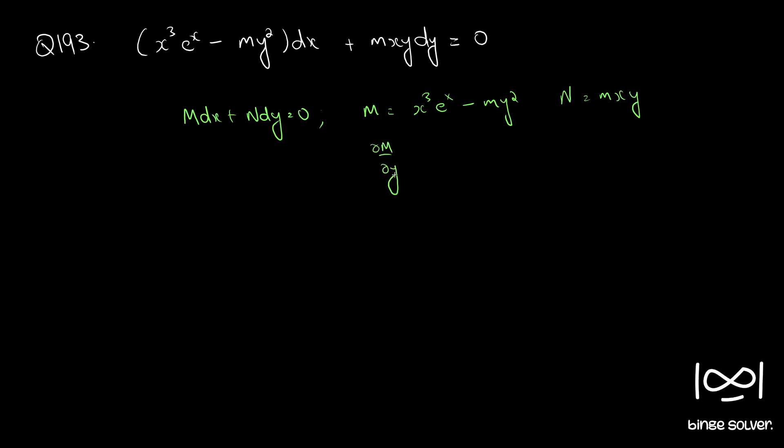We check whether the differential equation is exact using the necessary and sufficient condition, which is ∂M/∂y equal to ∂N/∂x. Here, ∂M/∂y is minus 2 m y and ∂N/∂x is m y. Therefore, ∂M/∂y is not equal to ∂N/∂x, so the differential equation is not exact.